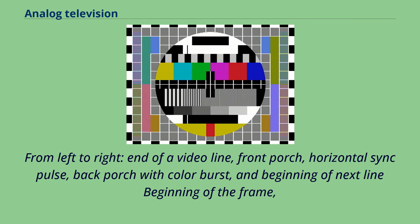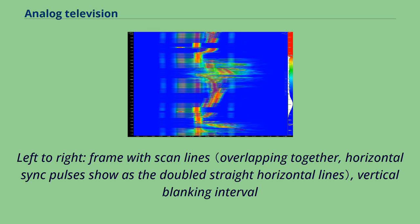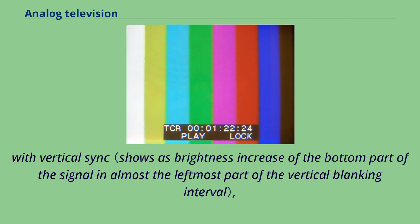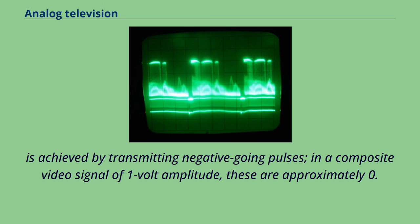Image synchronization is achieved by transmitting negative going pulses. In a composite video signal of 1 volt amplitude, these are approximately 0.3 V below the black level. The horizontal sync signal is a single short pulse which indicates the start of every line. Two timing intervals are defined: the front porch between the end of the displayed video and the start of the sync pulse, and the back porch after the sync pulse and before the displayed video.